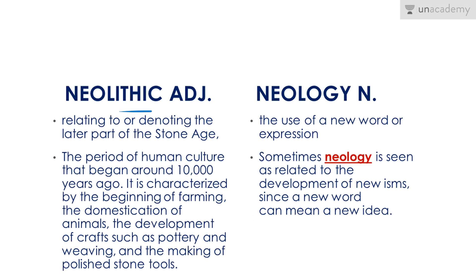First word: Neolithic — adjective. Relating to or denoting the latter part of the Stone Age. The period of human culture that began around 10,000 years ago, characterized by the beginning of farming, the domestication of animals, the development of crafts such as pottery and weaving, and the making of polished stone tools. This is called the Neolithic Age.